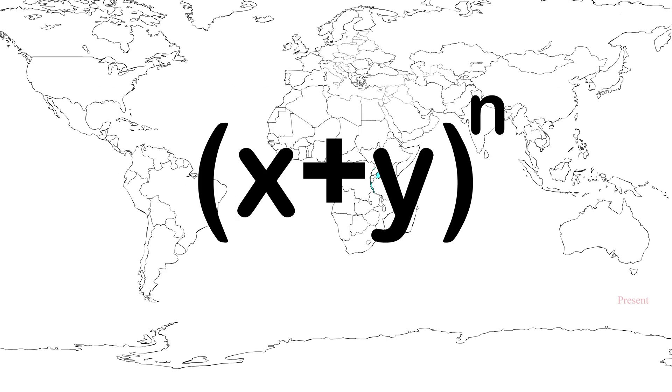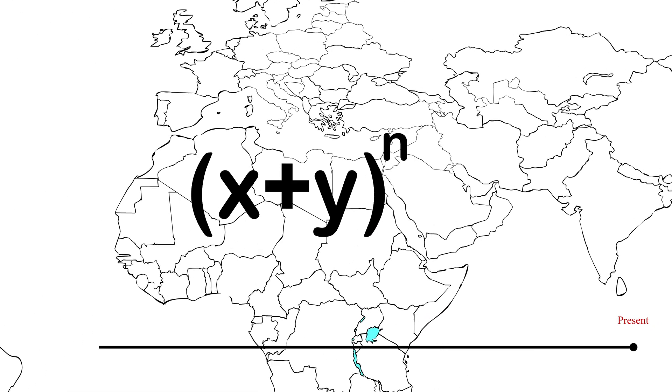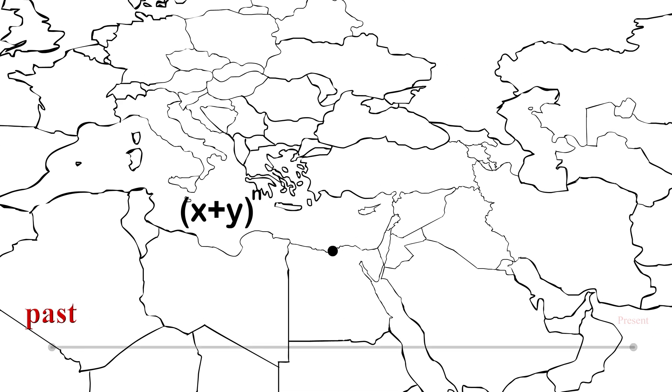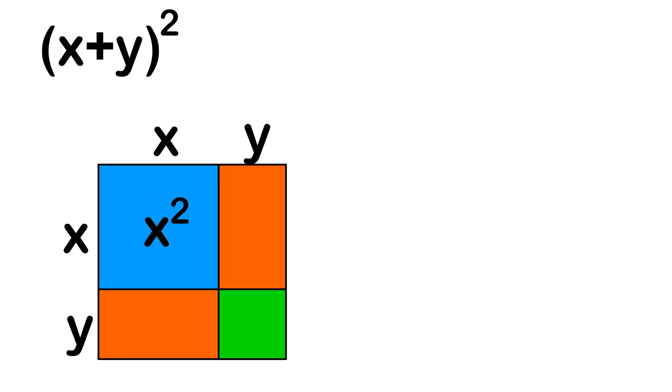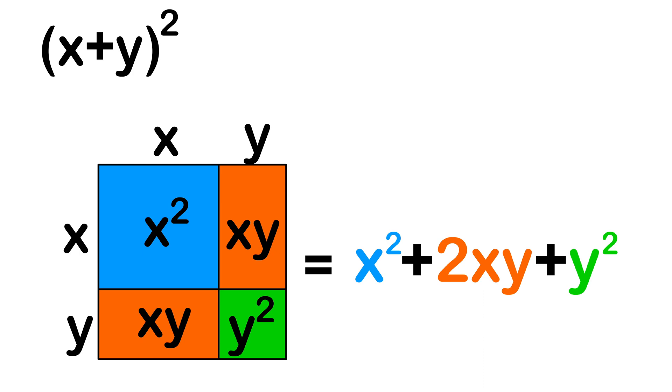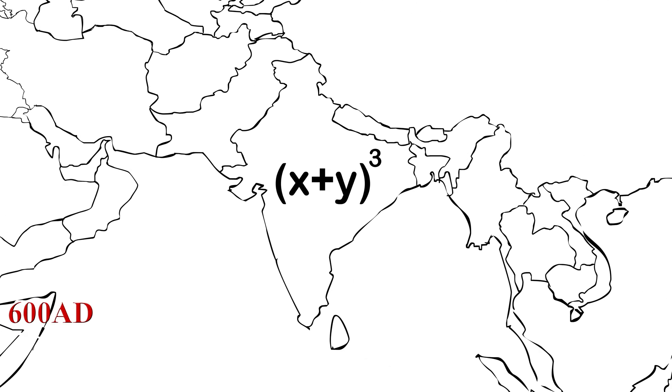The theorem as we know it was discovered around the year 1000, but various snippets were discovered throughout history. For example, Euclid expressed the binomial expansion of x plus y squared in geometric terms. Around 600 AD, India was able to express the cubic expansion of x plus y cubed.